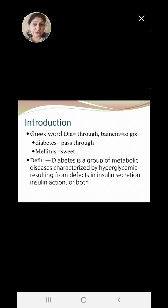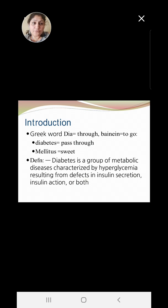Diabetes mellitus is actually a Greek word where 'dia' means through and 'benin' means to go, and 'mellitus' means sweet — so it is basically passing sweet through the urine. It is defined as a group of metabolic diseases characterized by hyperglycemia that results from defects in insulin secretion, insulin action, or both.